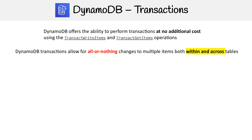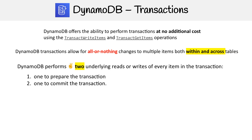Transactions allow for all-or-nothing changes to multiple items, both within and across tables. DynamoDB will perform two underlying reads or writes for every item in the transaction — one to prepare the transaction and one to commit it — which will consume your RCUs or WCUs.